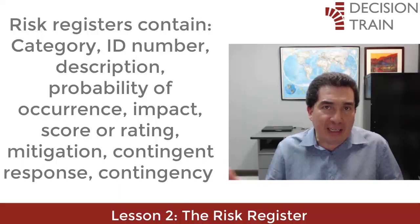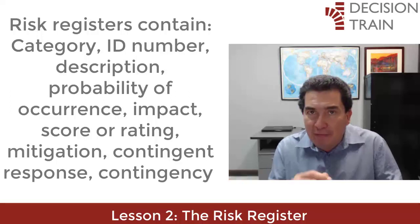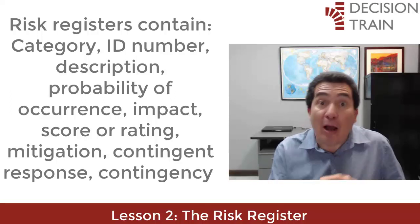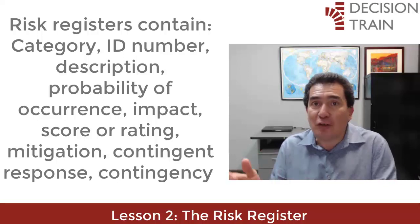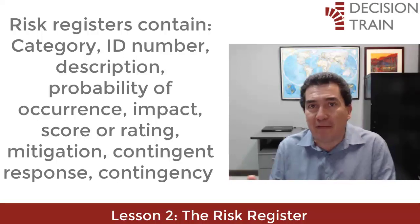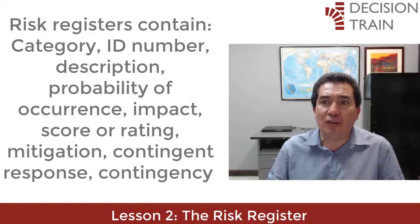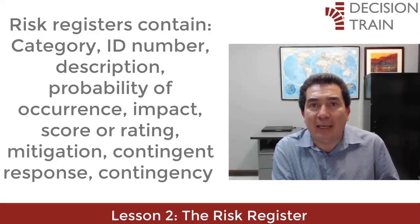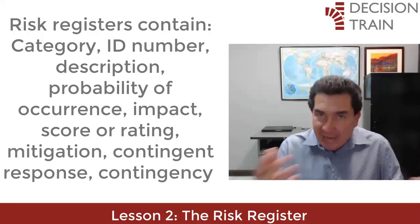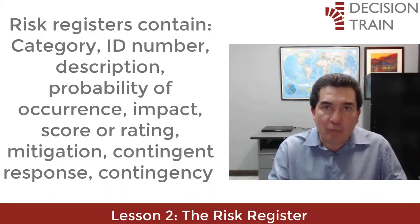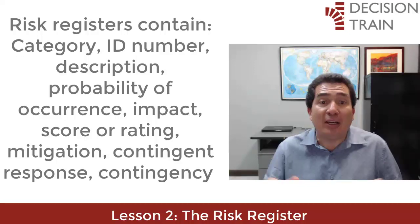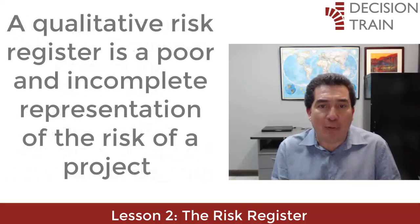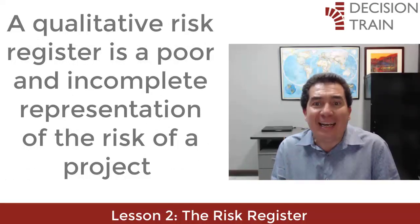A typical risk register also contains an identification number from the risk breakdown structure, a brief description or name of the risk to make it easy to discuss, the probability of occurrence, the impact — that is the consequence or severity if the event actually occurs — the score or risk rating, which is the multiplication of probability by impact, mitigation steps, contingent response, and contingency, which is the budget assigned to the contingent response.